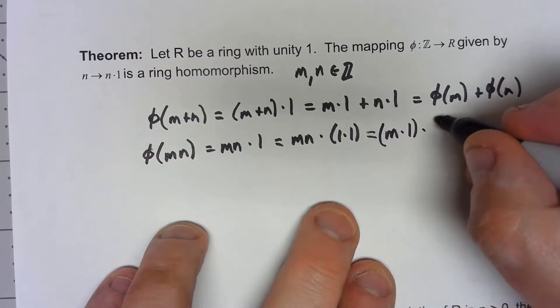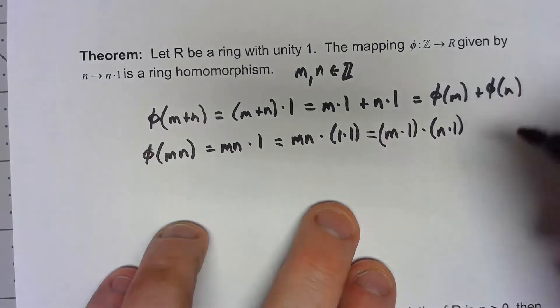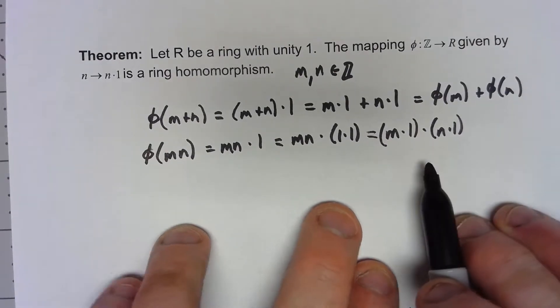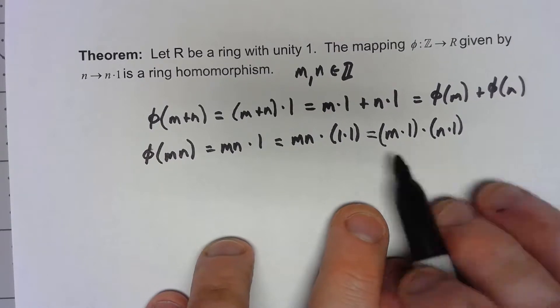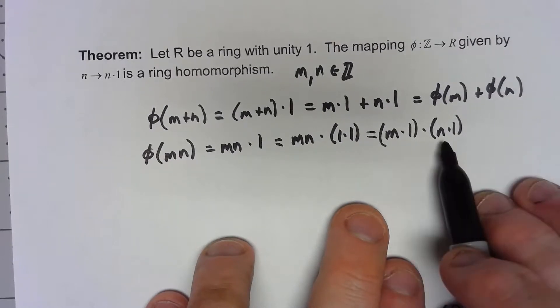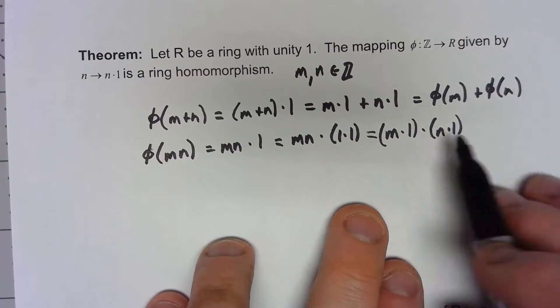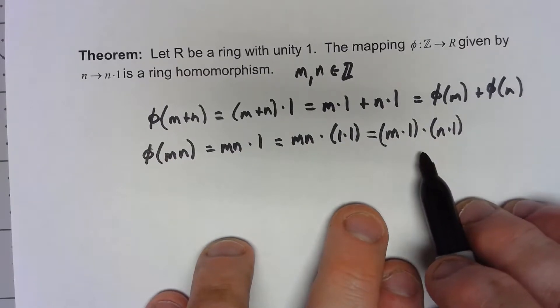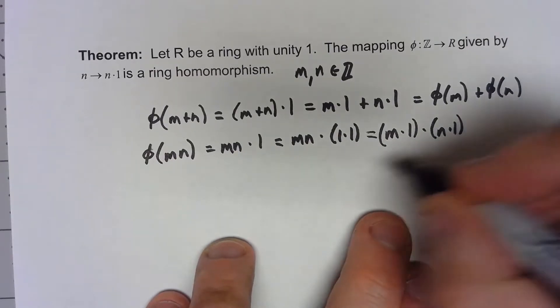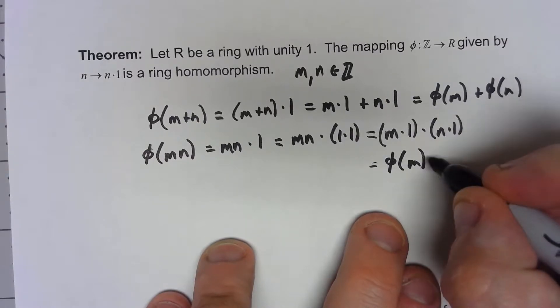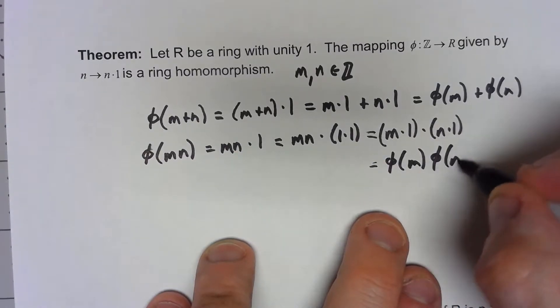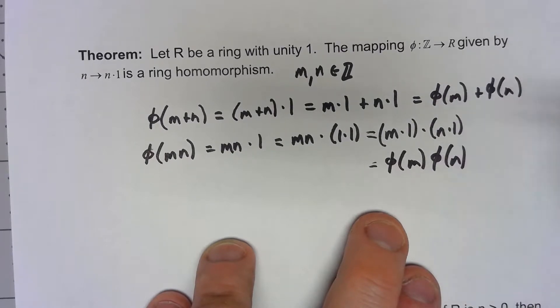Again this is more complicated than it looks because this isn't just integer multiplication, but we have shown that this works regardless. And then again of course, now that I've got there, this is φ of m times φ of n. It preserves addition, it preserves multiplication, therefore this mapping is a homomorphism.